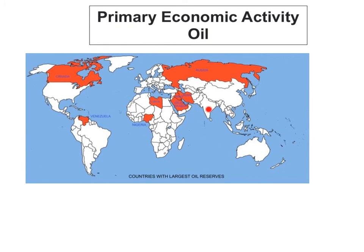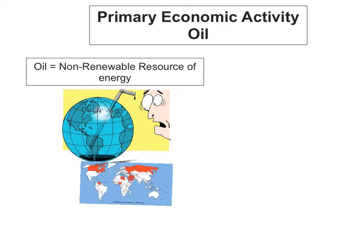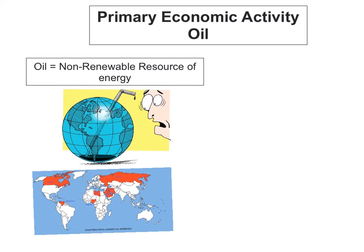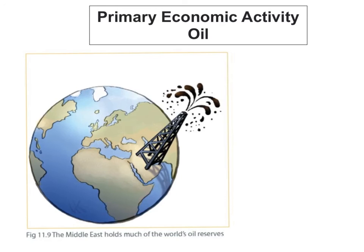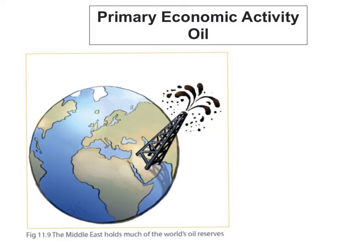As you can see from the picture, these are the countries with the largest oil reserves. You've got Nigeria, Libya, Saudi Arabia — a lot of the Middle East have the most amount of oil supply — as well as Russia, Canada, and Venezuela. However, most of the world's oil supply is found in the Persian Gulf in the Middle East.